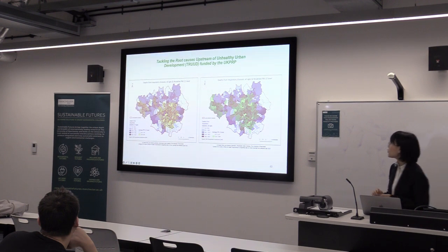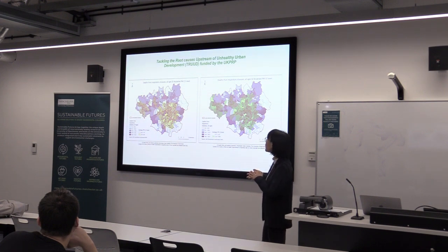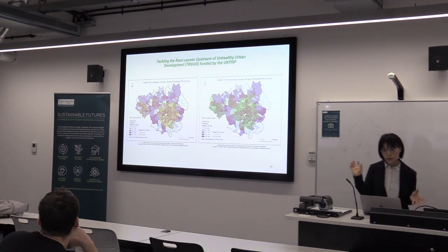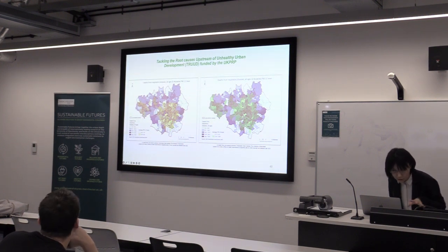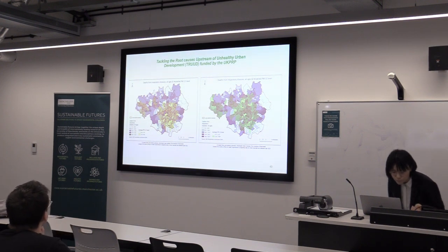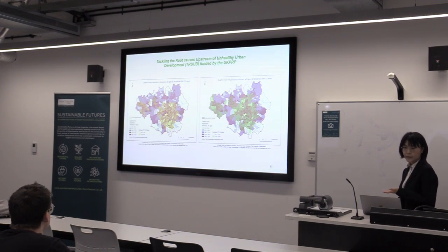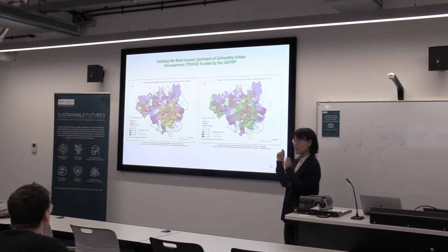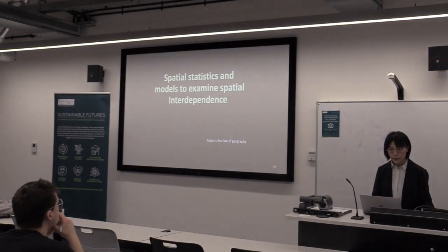If you look at the maps, you can also see a moderate correlation. In Manchester City, areas shown in darker color with higher death rate from respiratory disease tend to be in the areas with higher average PM2.5 level. Although this correlation is not as strong as the one with income deprivation.